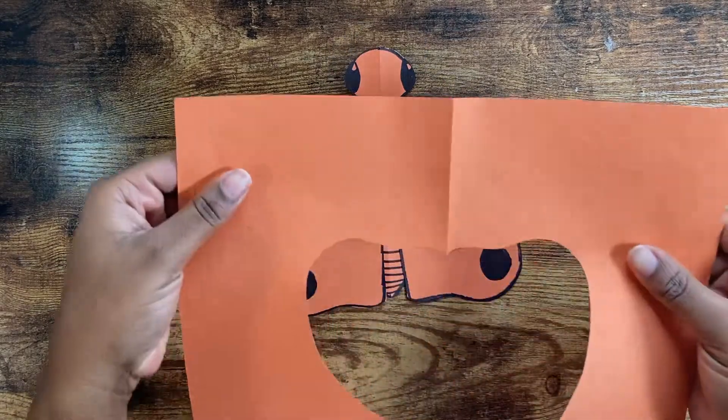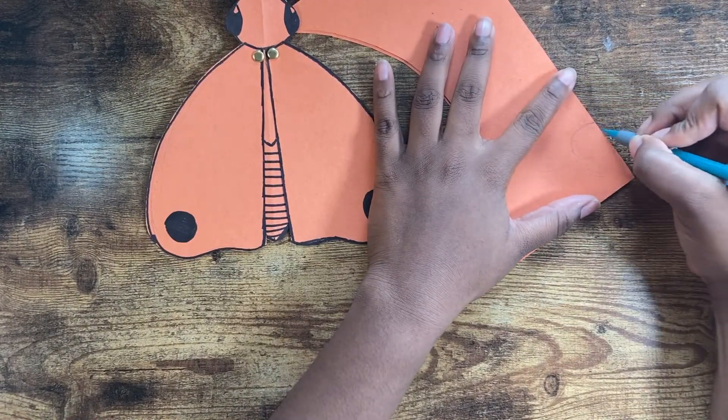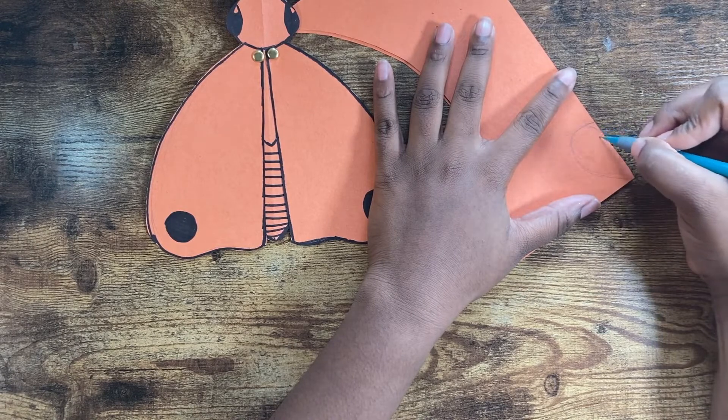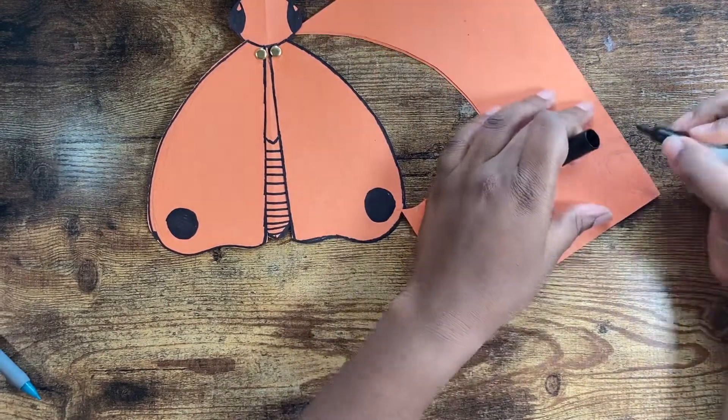Now let's grab our scrap piece of paper. And right here we are going to make some antennae. I'm drawing like a half heart shape just because that's how I want them to look. I'm going to trace over so you can see a little bit better.